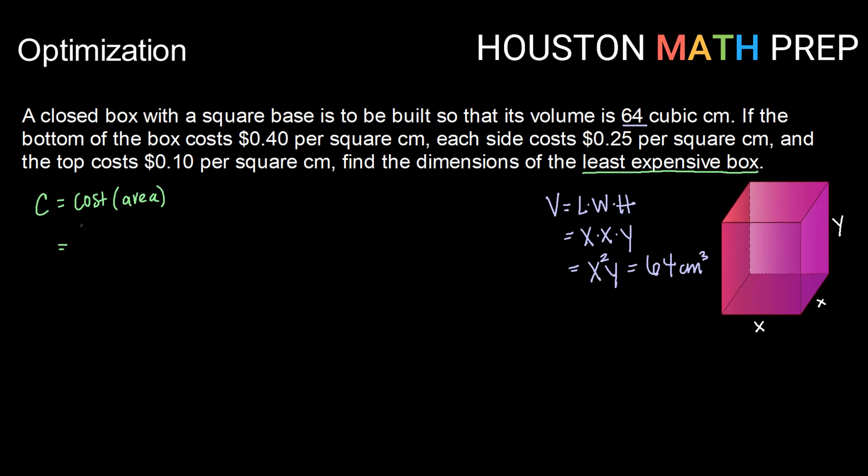So here the cost function is going to be based upon the cost of each piece times the area of that piece. So if we break it down by the different prices, first we have the bottom of the box, which is 40 cents per square centimeter. So 40 cents times the area for the bottom of our box here, since it's a square, will be x squared.